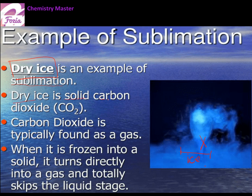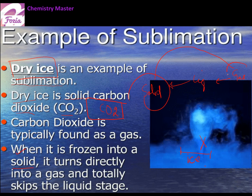Dry ice is solid carbon dioxide. Carbon dioxide is normally found as a gas — a constituent of air — which is also exhaled during breathing. When it is frozen, it directly turns into solid state. Normally, when we cool a gas we get liquid, and when we cool liquid further we get solid. But here the liquid stage is skipped — the gas is directly converted into solid. This is something magical for a chemist.